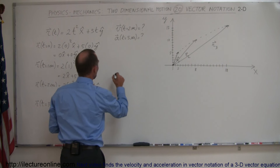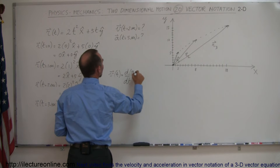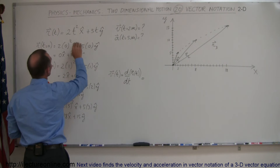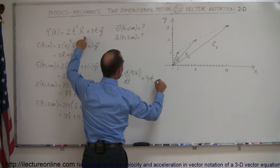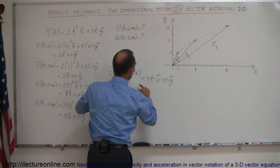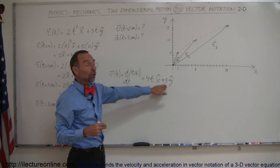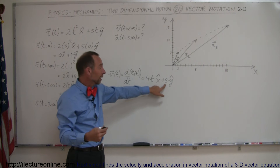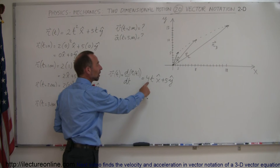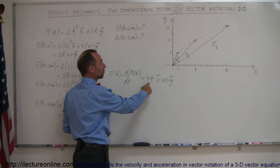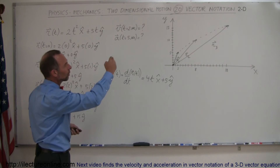The velocity is the derivative of position, so v as a function of time equals the derivative with respect to time of r(t). Taking the derivative of 2t²x̂ + 5tŷ gives v(t) = 4tx̂ + 5ŷ. Notice the y-direction velocity no longer depends on time — it's a constant 5 meters per second with no acceleration in y. But in the x direction it does depend on time: 4 m/s after 1 second, 8 after 2, 12 after 3 — clearly accelerating.